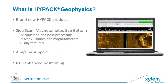HIPAC Geophysics is a new product that includes side scan, magnetometer, and sub-bottom data collection and post-processing. Across those three types of survey devices, we have 70 different sonars and magnetometers supported, and we are fully featured — you get all the features of the standard HIPAC side scan, mag, and sub-bottom acquisition and processing. We also have ASV and USB support for unmanned vehicles, and very precise positioning through RTK-enhanced GPS.